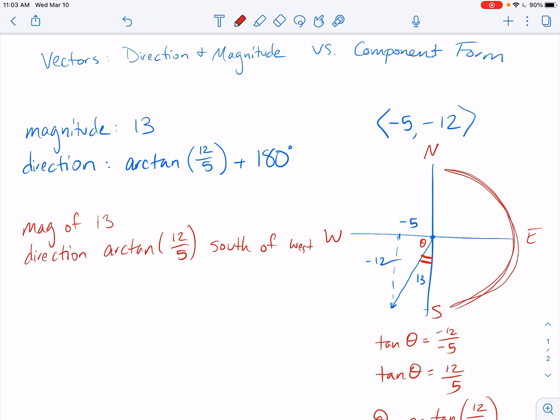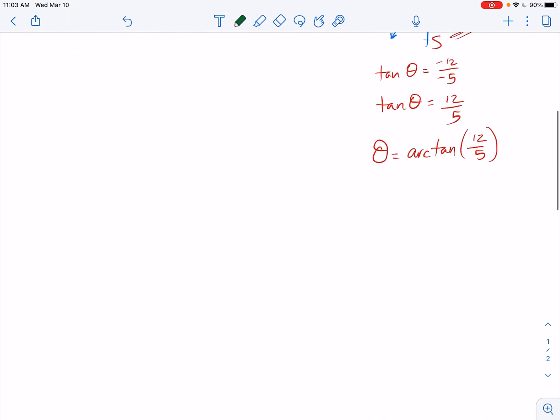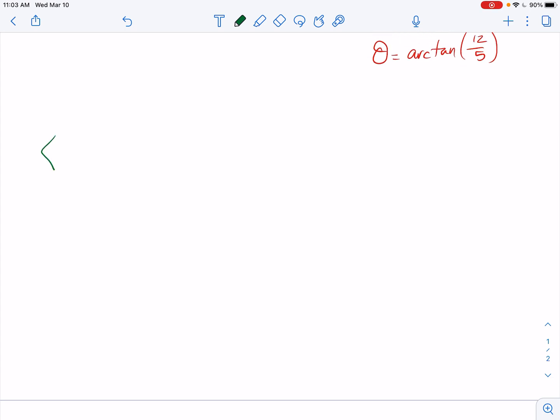Let's do one more. And hopefully I can say everything correctly the first time. So let's pretend, we'll do another triple. Let's say we've got the vector, 3, 4, 5. Let's go negative 3, positive 4.